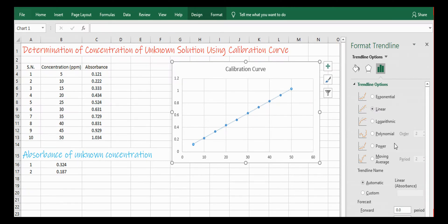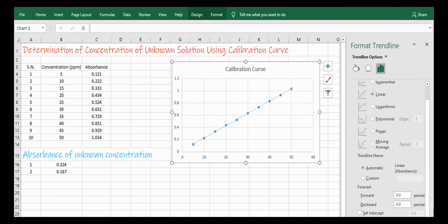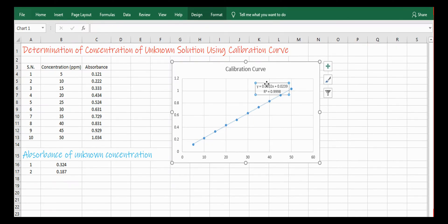You will see like this. Then go here and tick on Display Equation on Chart, Display R Squared Value on Chart. Then you will see like this. You can drag it anywhere and you can move it.